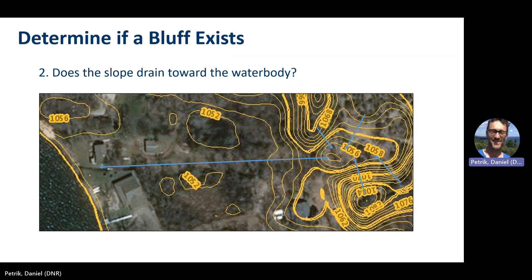The next item in the bluff definition asks: does the slope drain towards the water body? This doesn't mean that the runoff must reach the water body, just that the runoff of any rainfall would naturally drain towards the water body. In this example, you can see that runoff doesn't always have to flow in a straight line to the water body, just that it drain towards it.